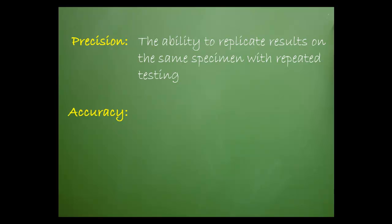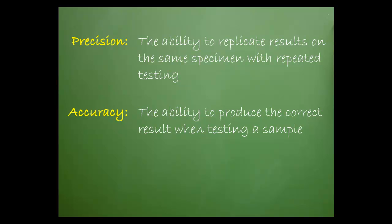Test systems should be both precise and accurate. Precision is the ability to replicate results on the same specimen with repeated testing. Accuracy is the ability to produce the correct result when testing a sample.